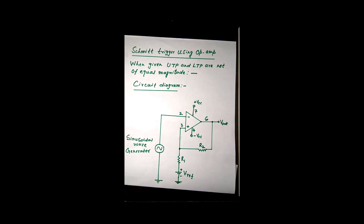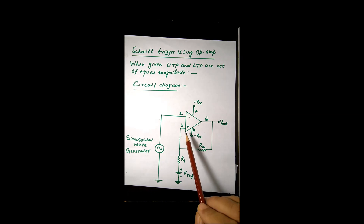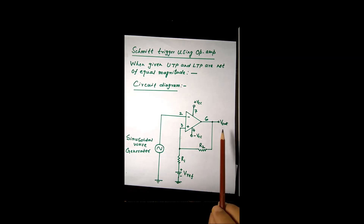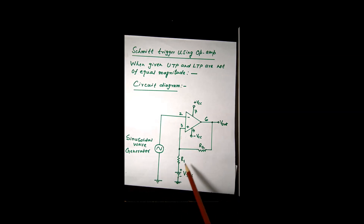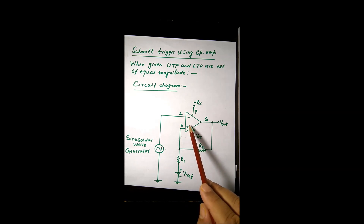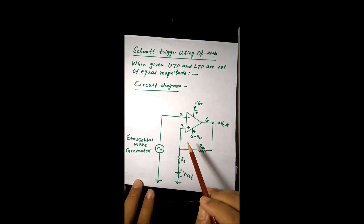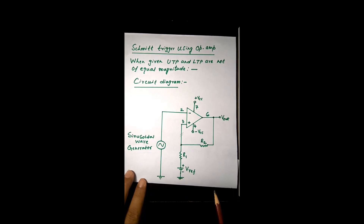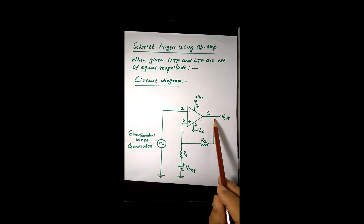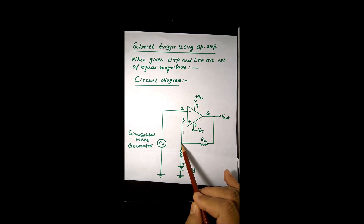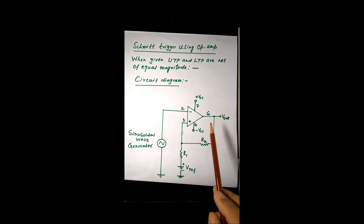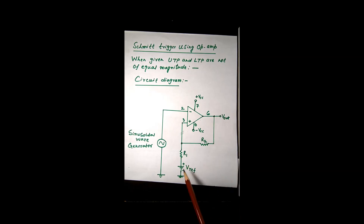First we have to find an expression for UTP. UTP is the potential at pin 3, the non-inverting terminal, when output is at plus V_sat. LTP is again the potential at pin 3 when the output is at minus V_sat. Since the op-amp has very high input impedance, it can be considered isolated. The circuit for calculating UTP and LTP consists of R2, R1, going to ground. There are two potential effects at pin 3: one is plus V_sat when finding UTP, and another is V reference.